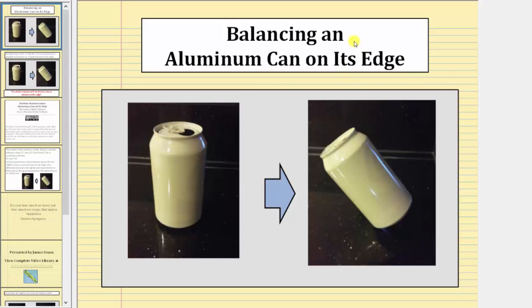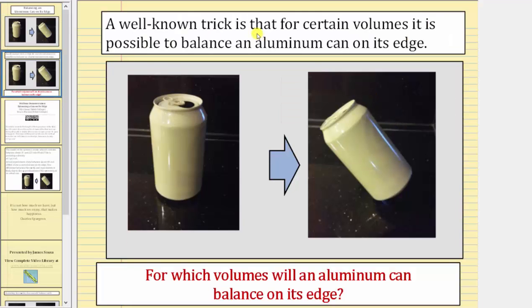Welcome to a presentation on balancing an aluminum can on its edge, as pictured here on the right. A well-known trick is that for certain volumes it is possible to balance an aluminum can on its edge. The question we want to answer is: for which volumes will an aluminum can balance on its edge?